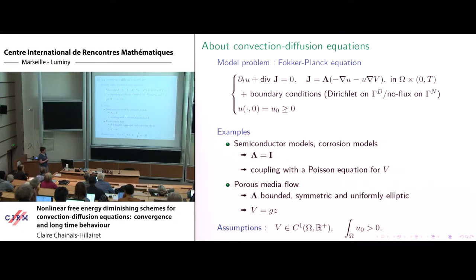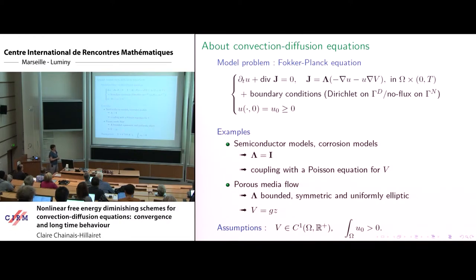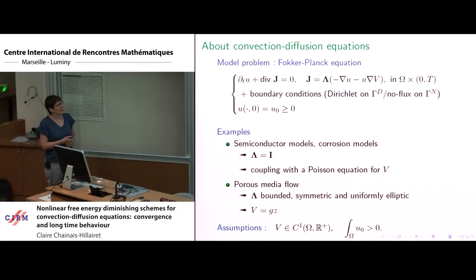It arises also in porous media flow, and in this case lambda is bounded, symmetric, and uniformly elliptic, and V is chosen as G times Z so that the gradient is just the G vector. The assumptions are that V is a regular given function, and we assume that the initial data U_0 is non-negative but the total mass is positive.